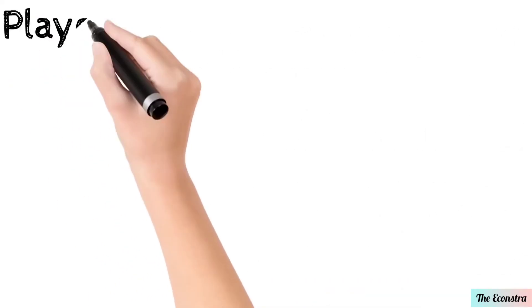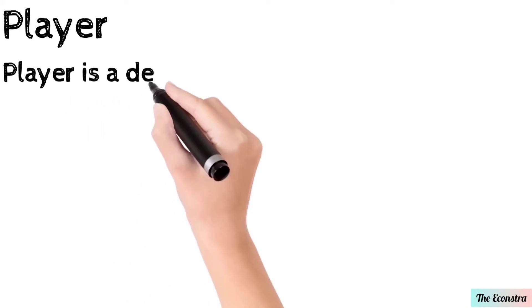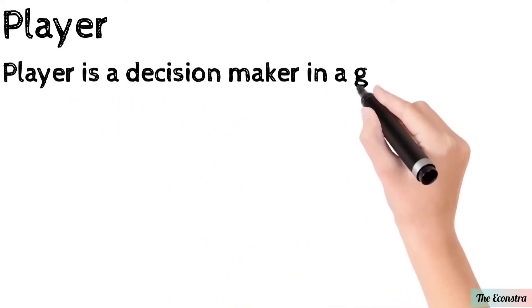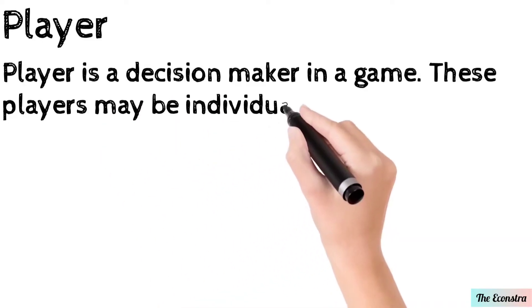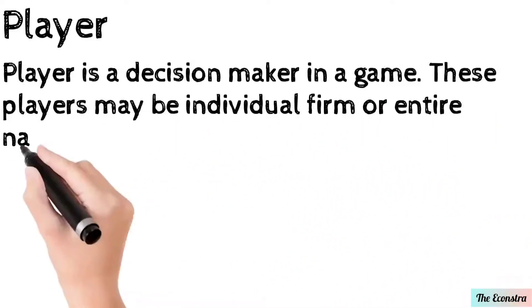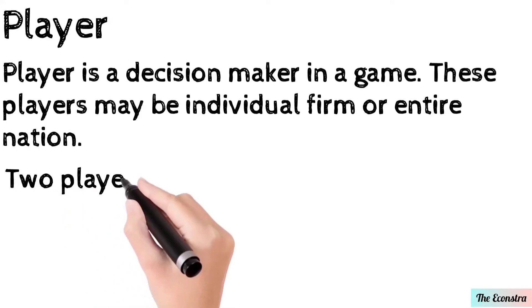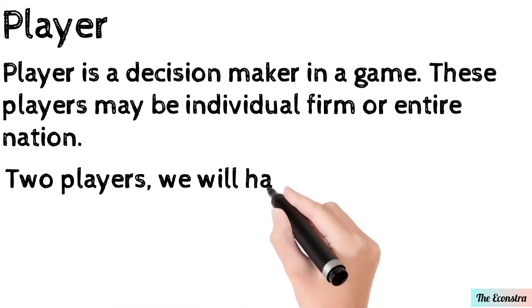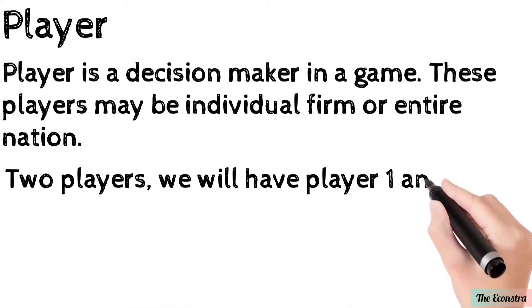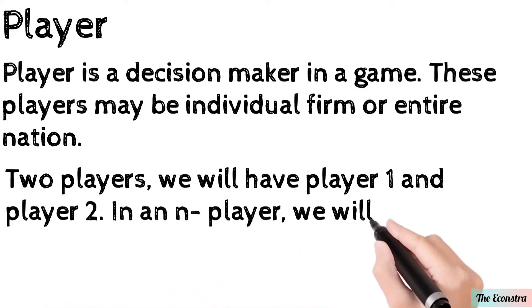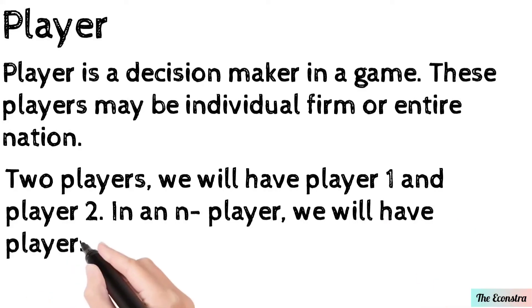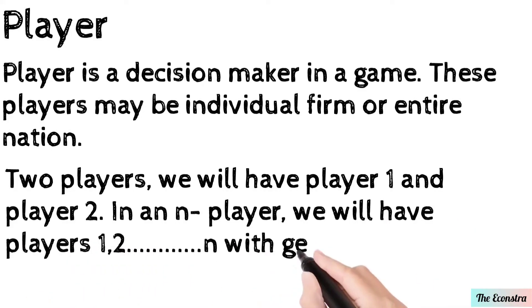Player is a decision maker in a game. These players may be individuals, firms, or entire nations. That means a player is a decision maker who decides how to play a game, and players are individuals, firms, and entire nations. Players are denoted in number form 1, 2, 3, etc., and generic player is labeled i.